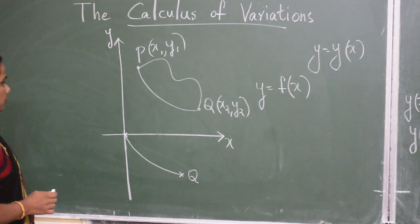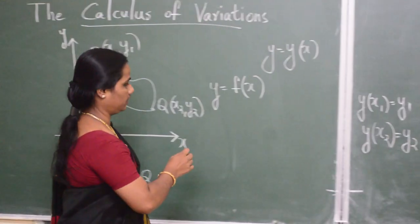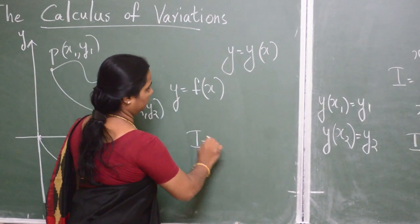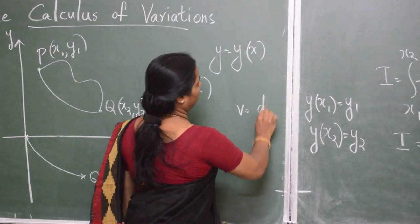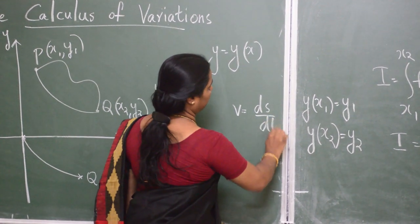We have to minimize i equal to integral x1 to x2 dt as we know that v equal to ds by dt.